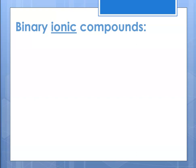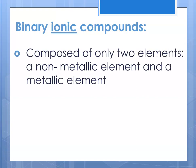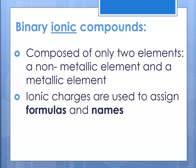Beginning with binary ionic compounds — remember, binary ionics are composed of a metal and a nonmetal, and if it's binary there are only two elements present. Binary means two elements, a nonmetal and a metal, and the ionic charges are used to assign both formulas and names.